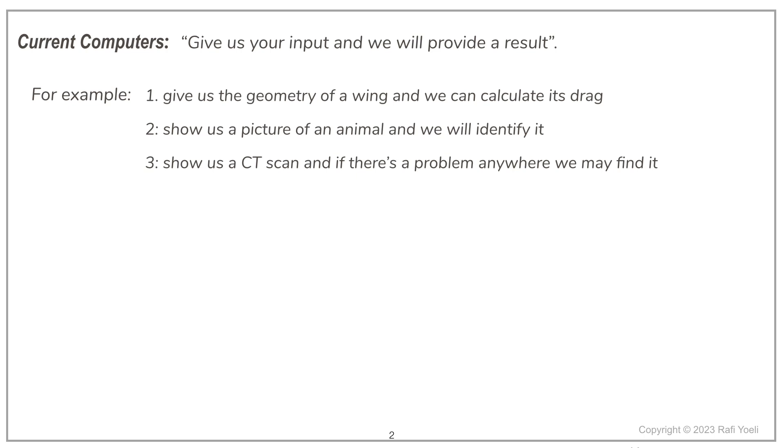For example, given a geometry of a wing, computers can calculate its drag. Show a computer a picture of an animal, and it can probably identify it. Show a computer a CT scan, and if there's an anomaly there, it will probably identify it.